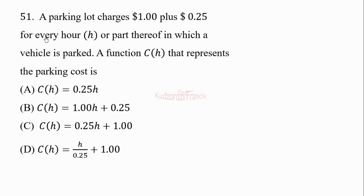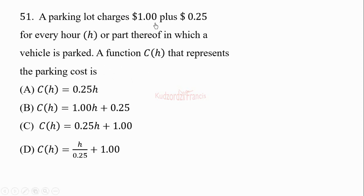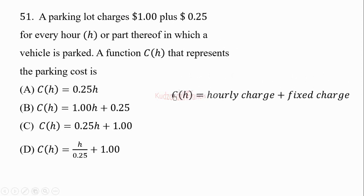For the first question, we have a parking lot that charges $1 plus $0.25 for every hour or part thereof in which a vehicle is parked. A function C of h represents the parking cost. The parking cost comprises a fixed charge of $1 plus an hourly charge of $0.25. So the cost will be the hourly charge plus the fixed charge: 0.25 times h, plus the fixed cost which doesn't change.